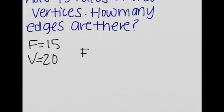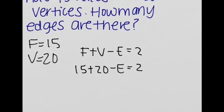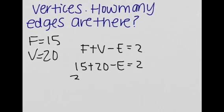So we use our formula F plus V minus E is equal to 2. We are going to substitute in F and V. So we have 15 plus 20 minus E is equal to 2. So we have 35 minus E is equal to 2.